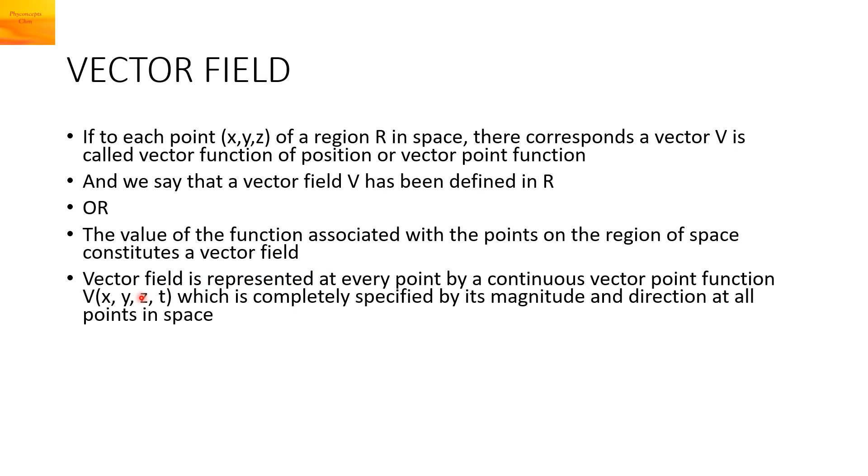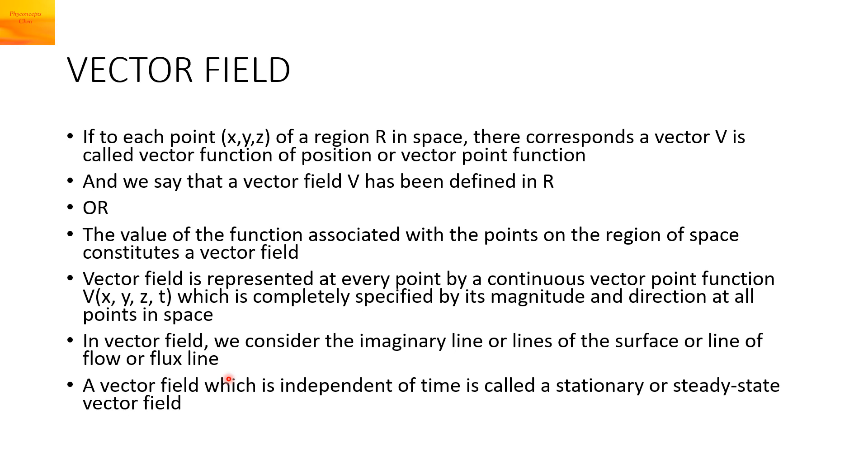The vector point function, suppose we take as capital V, it is specified by its magnitude and direction at all points in the space. In vector field, we consider the imaginary lines of the surface or line of flow or flux line. A vector field which is independent of time is called a stationary or steady state vector field.